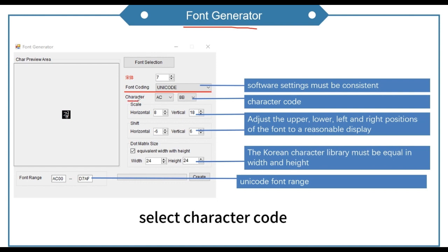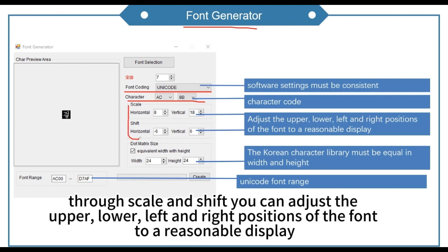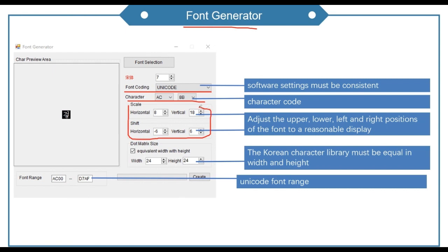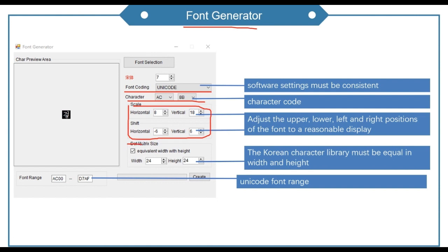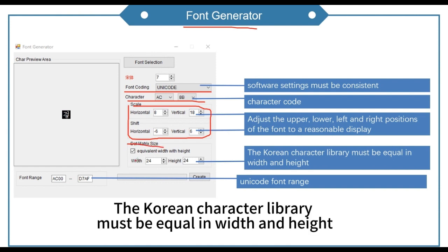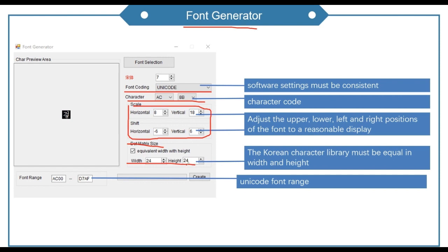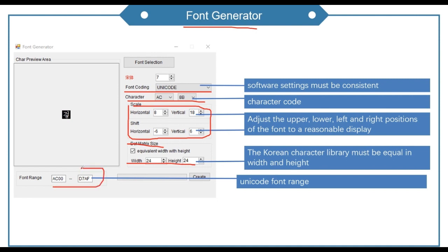Select the character code. Through Scale and Shift you can adjust the upper, lower, left, and right positions of the font for a reasonable display. Set the dot matrix size. The Korean character library must be equal in width and height. Then input the Unicode font range.